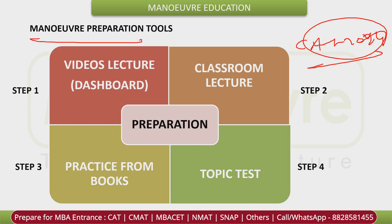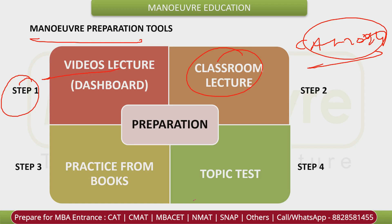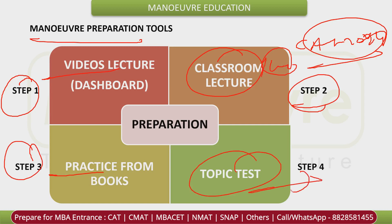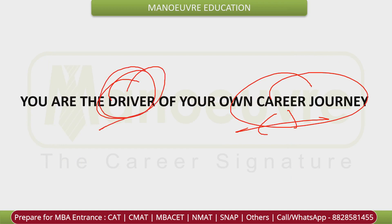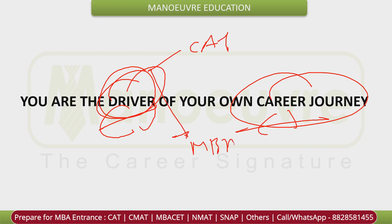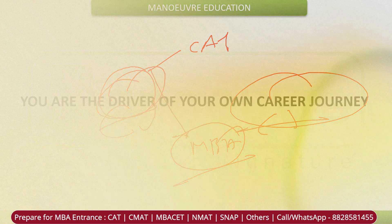If you have joined Manual, the 4-step preparation process is: Step 1 — before class, watch the recorded videos. Step 2 — attend classroom or live lecture. Step 3 — practice questions from your book and write the topic test. This 4-step process applies to all topics from all sections. You are the driver of your own career journey, so try to be the best driver, perform well in CAT, and get into the best MBA colleges. All the best. Thank you.